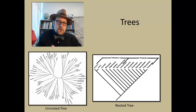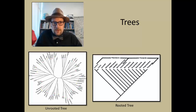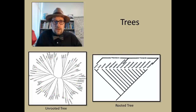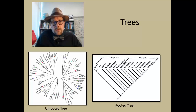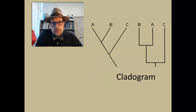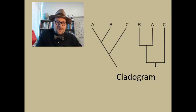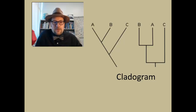Trees can be unrooted or rooted. An unrooted tree is where you run the analysis looking for which species are most similar — grouping based on similarities. If you root your tree, you specify one of those branches as the primitive branch that first split off. Often this will be your outgroup species — the oldest species in the fossil record is specified as that first group leaving.